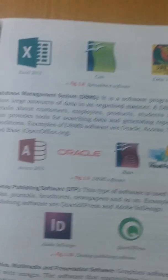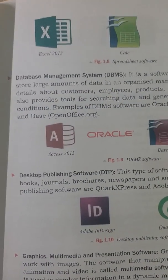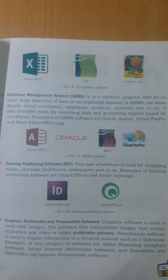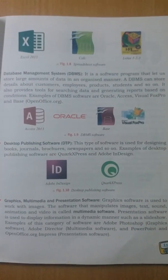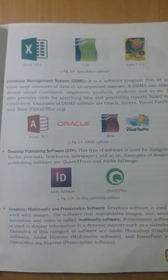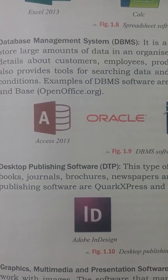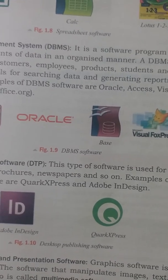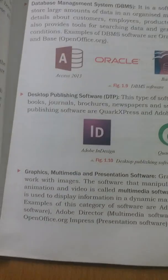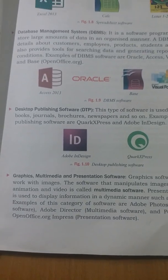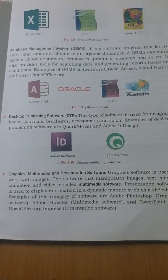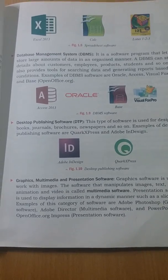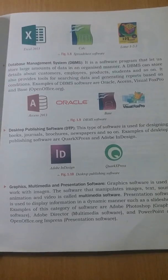Next is DBMS, where huge amounts of data can be managed. For example, in our school, the records of students and teachers are maintained and managed using DBMS. Some DBMS software are MS Access, Oracle, and LibreOffice Base, which you will study in ninth standard. Now, desktop publishing software — using these software, books, brochures, and newspapers are designed. They are used for publishing purposes.